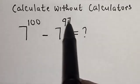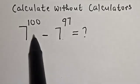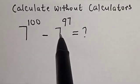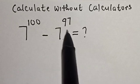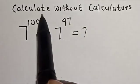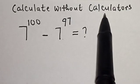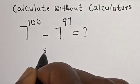We quickly want to evaluate this math problem: 7 raised to power 100 minus 7 raised to power 97. We want to calculate this without using a calculator.